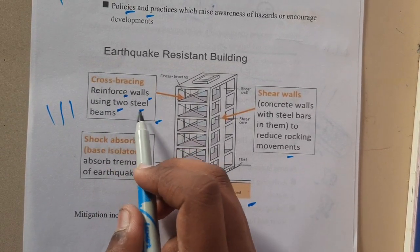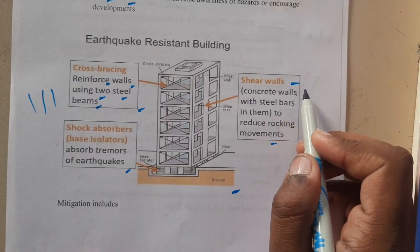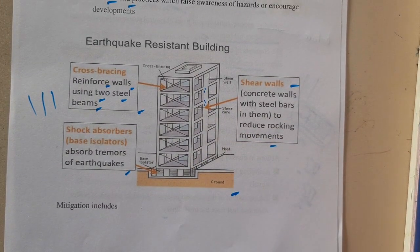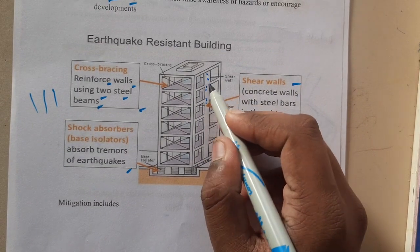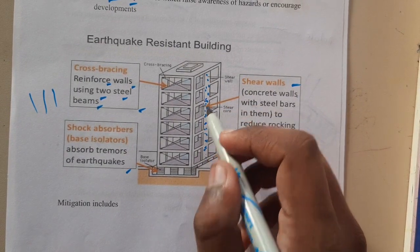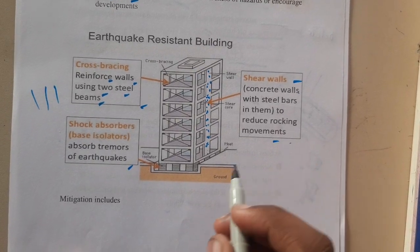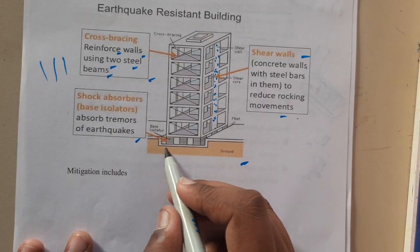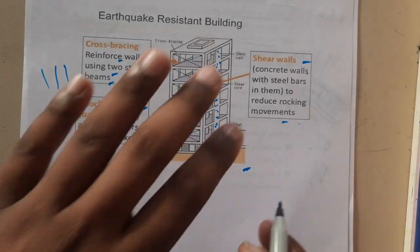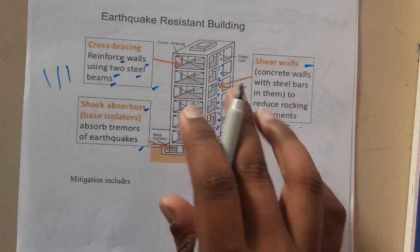Similarly, reinforced walls using steel beams are used. Shear walls also incorporate steel beams so there is less chance of the building collapsing or falling. If a long steel beam is strongly intact throughout the structure, there is a lesser chance that the building will collapse. At the bottom, shock absorbers are established — any vibration will be absorbed by these springs so the building is not affected.